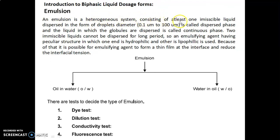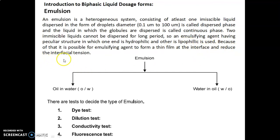An emulsion is a heterogeneous system consisting of at least one immiscible liquid dispersed in the form of droplets with diameter 0.1 micrometer to 200 micrometer, called the dispersed phase. The liquid in which the globules are dispersed is called the continuous phase. Two immiscible liquids cannot be dispersed for a long period, so an emulsifying agent — having one end hydrophilic and the other lipophilic — is used. It forms a thin film at the interface and reduces the interfacial tension.